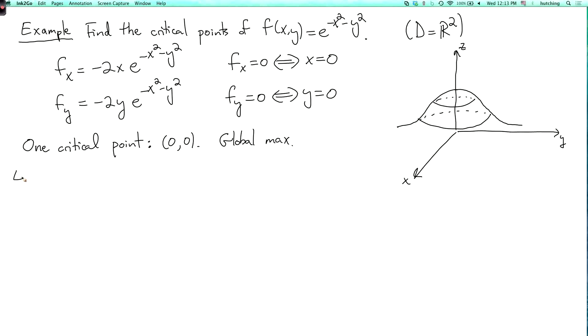Our next example will be to find the critical points of f of xy equals y squared minus x squared. So fx equals minus 2x and fy equals 2y.